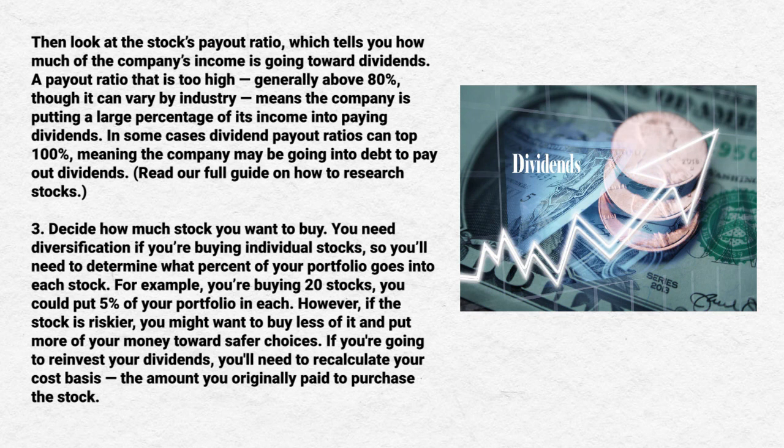Step three — decide how much stock you want to buy. You need diversification if you're buying individual stocks, so you need to determine what percent of your portfolio goes into each stock. For example, if you're buying 20 stocks, you could put five percent of your portfolio in each. However, if a stock carries more risk, you might want to buy less of it and put more of your money towards safer choices. If you're going to reinvest your dividends, you'll need to recalculate your cost basis — the amount you originally paid to purchase the stock.